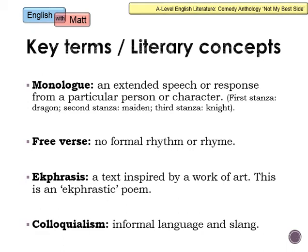The poem is structured in three monologues — an extended speech or response from a particular character. The first stanza is the dragon's monologue, the second is the maiden's, and the third is the knight's. The poem is also written in free verse, meaning there is no formal rhythm or rhyme — it sounds like natural speech. Perhaps the most important and technical term is ekphrasis, which is a text inspired by a work of art, so this is an ekphrastic poem. Finally, the way the characters talk is quite informal, giving the poem a colloquial tone, which forms much of its comedy.